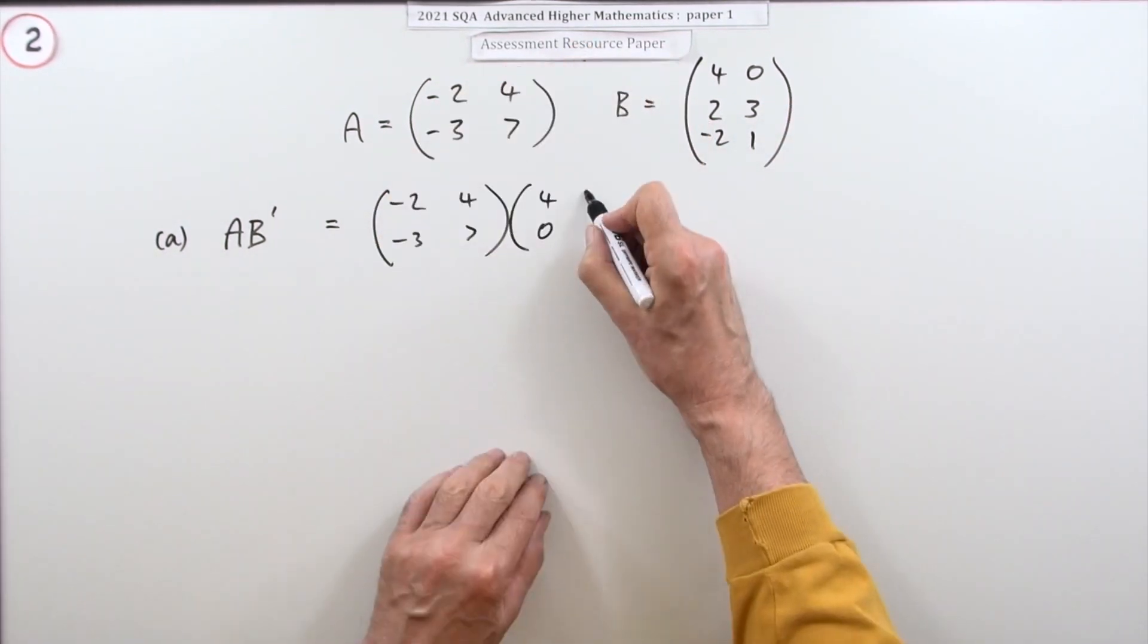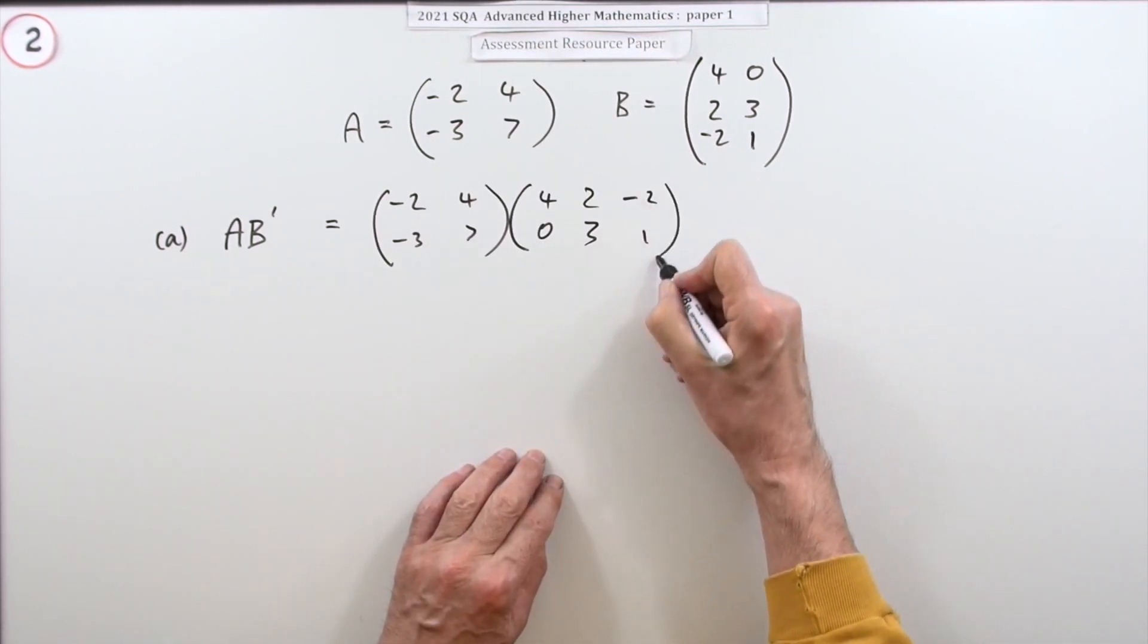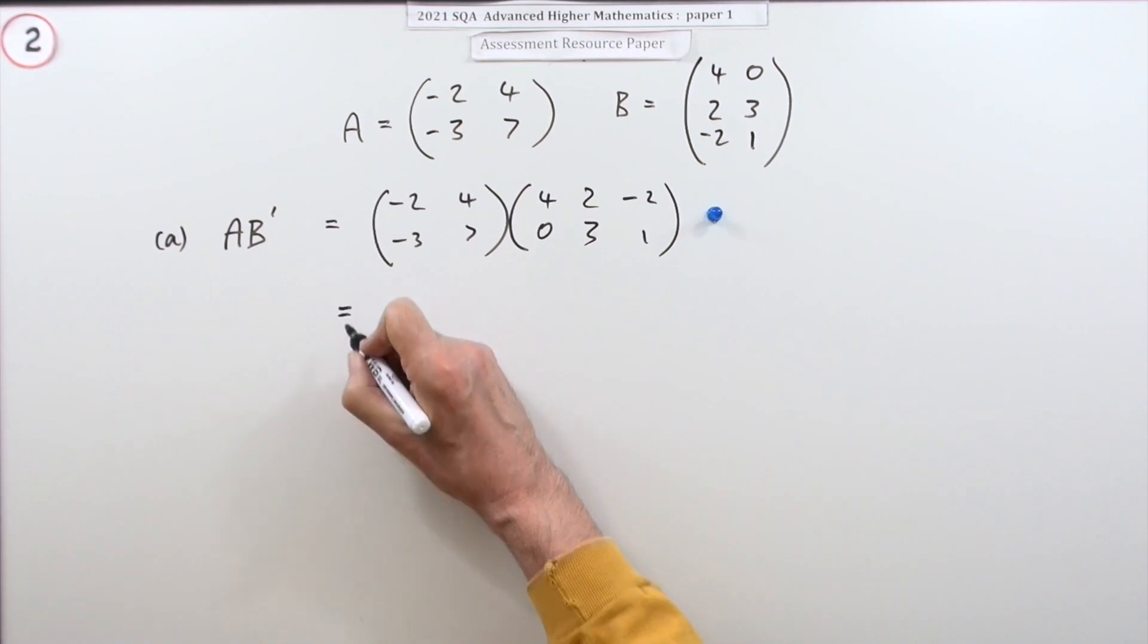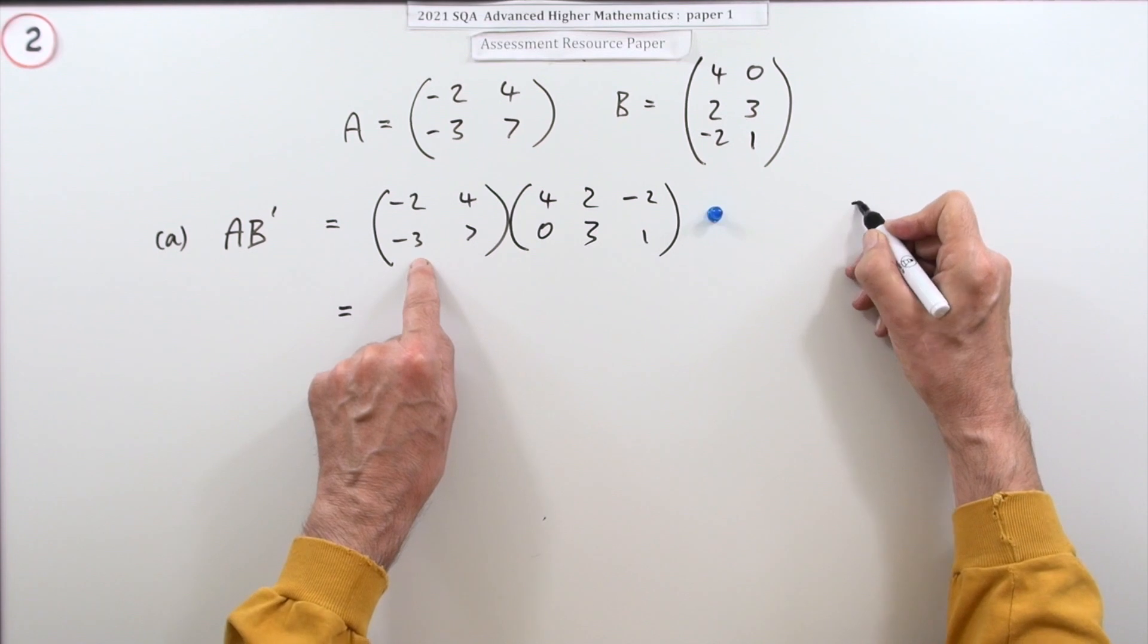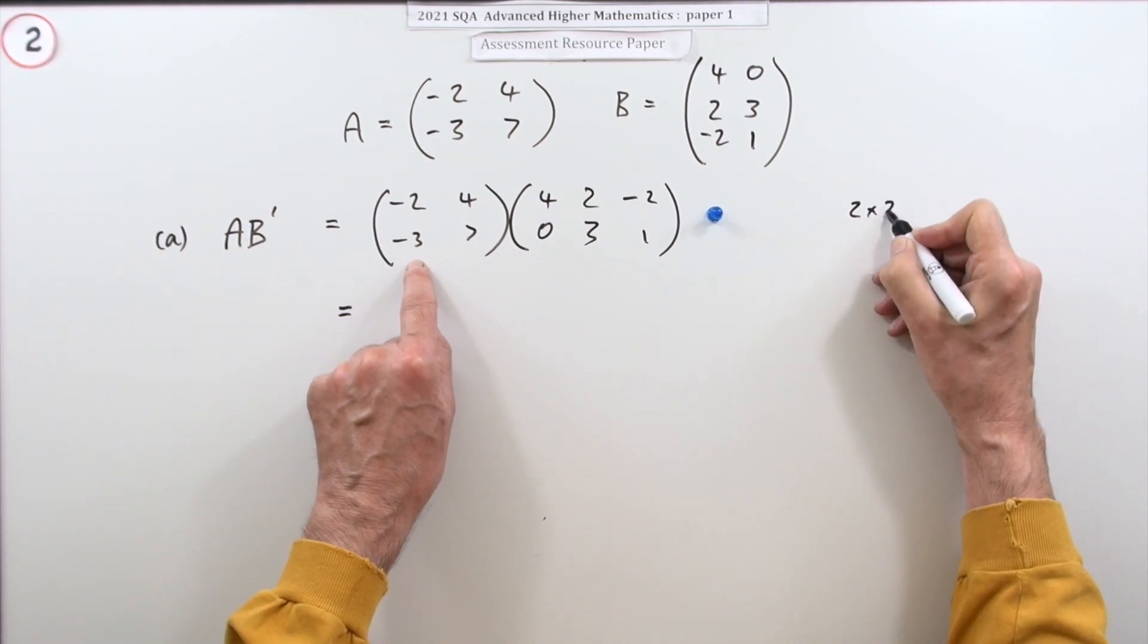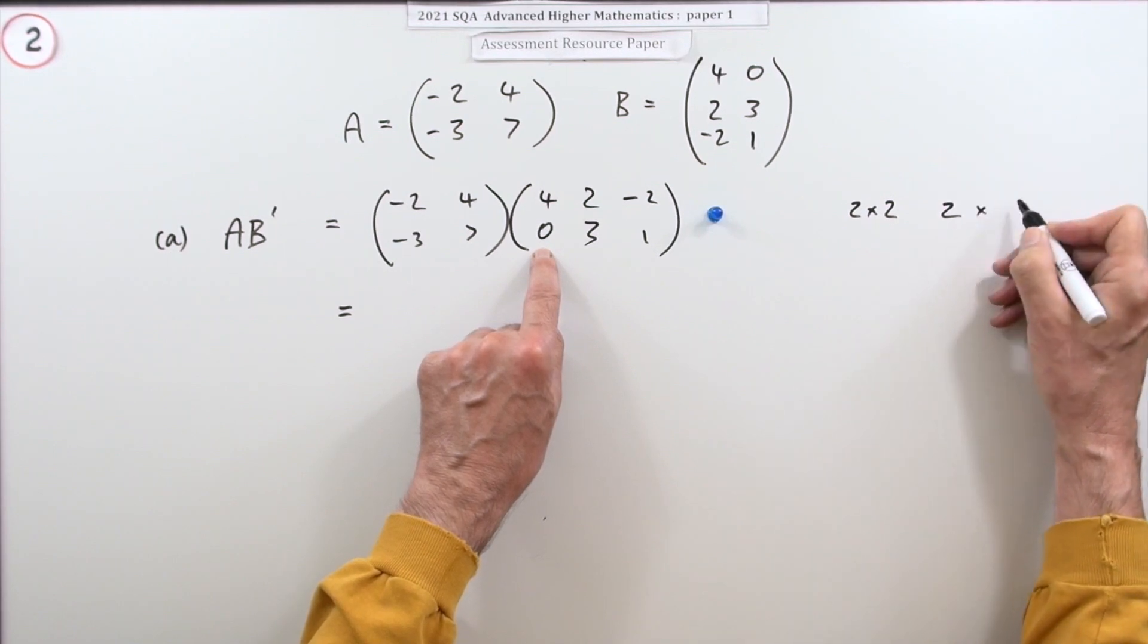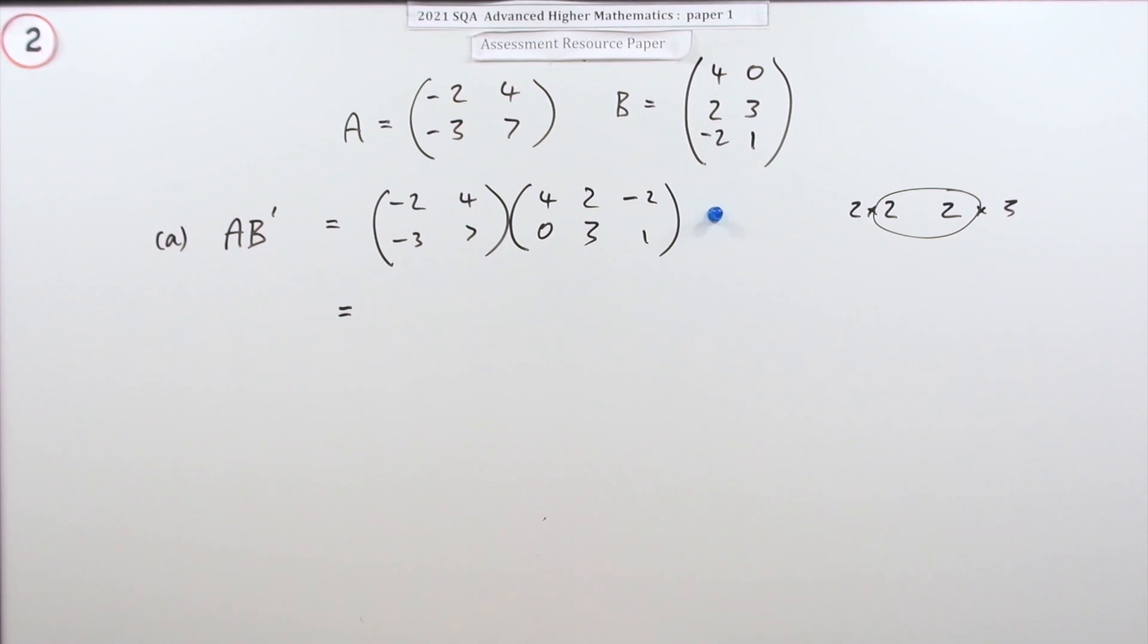In fact, doing that gets the first mark. Now you just carry out the multiplication, and of course they can be multiplied. You can always check that: that's a 2x2, that's a 2x3 because it's got two rows and three columns. If they match, you can carry out the calculation.